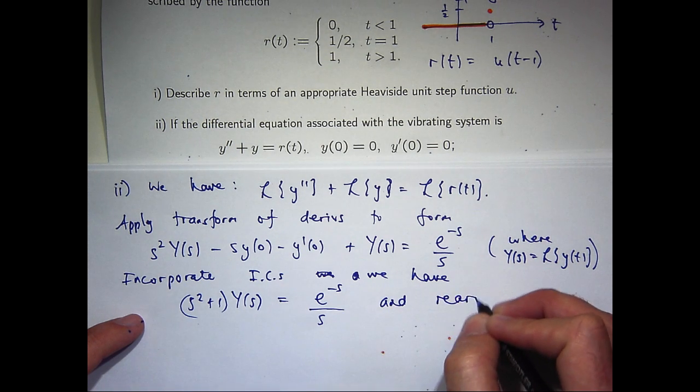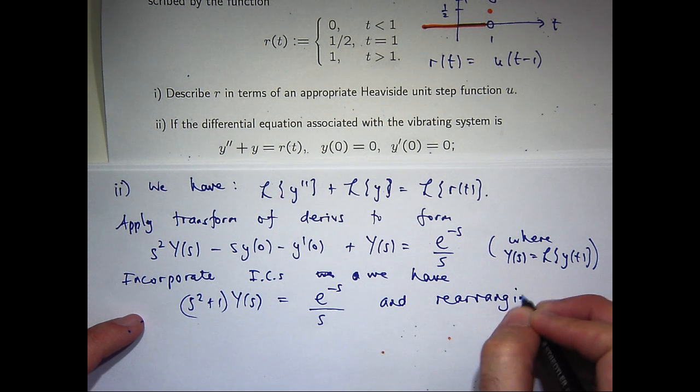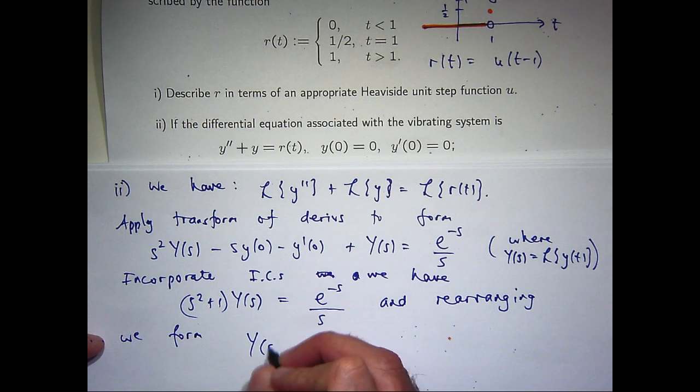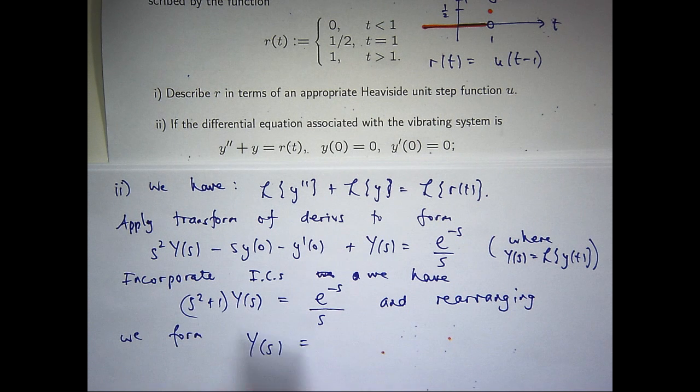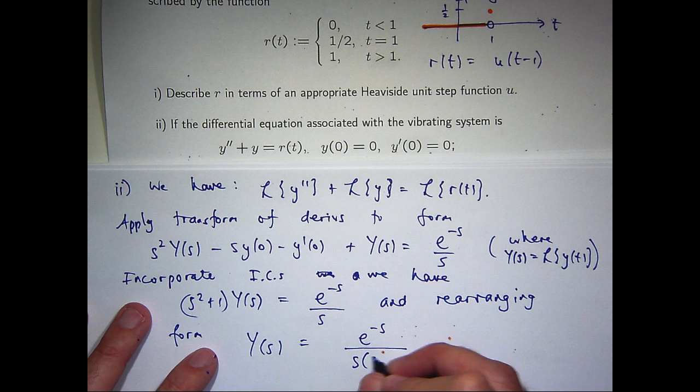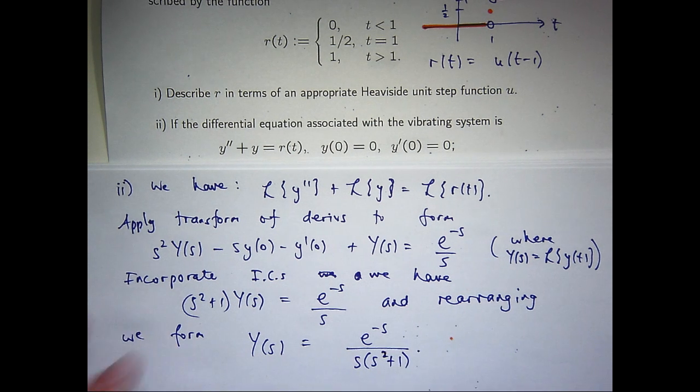And then, if we rearrange, we're going to get big Y of s equals e to the minus s all over s squared plus 1 bracket s. So we're at a good point now. We've solved the problem in the transformed algebraic setting. What we would like to do now is use inverse transforms to get everything back to our functions of t in our solution.